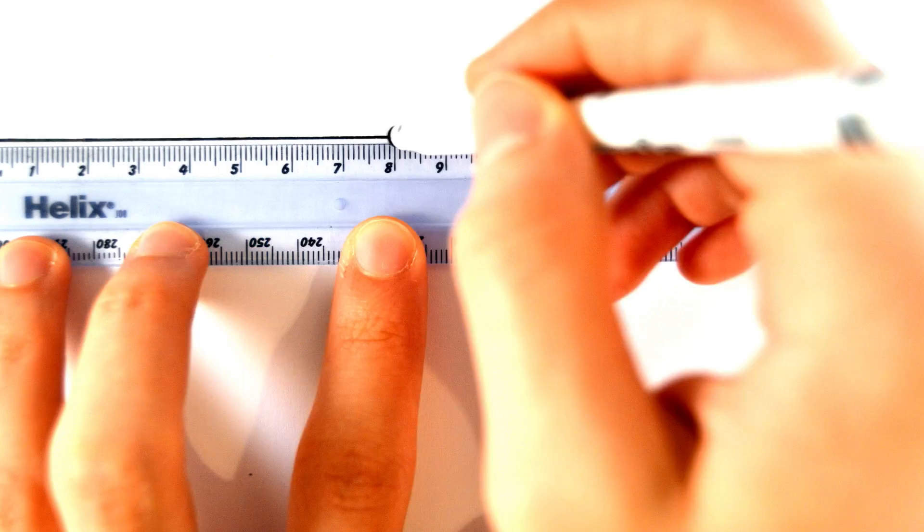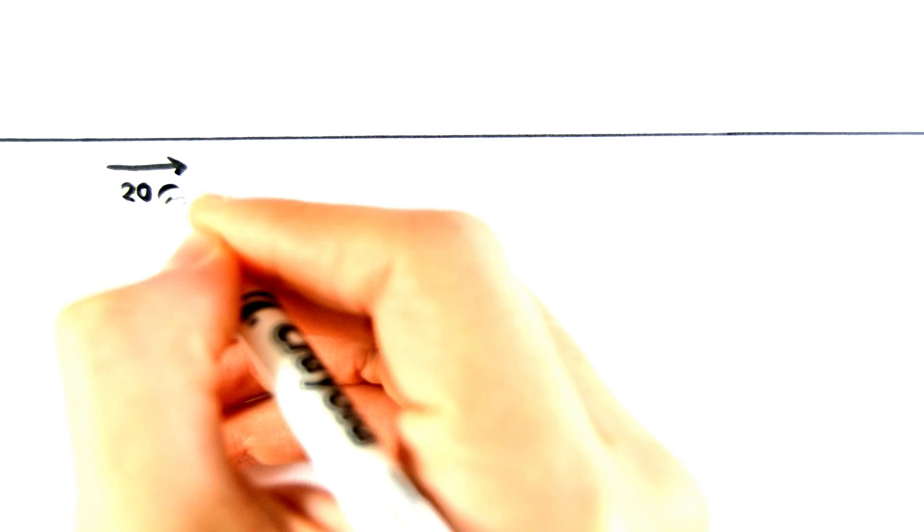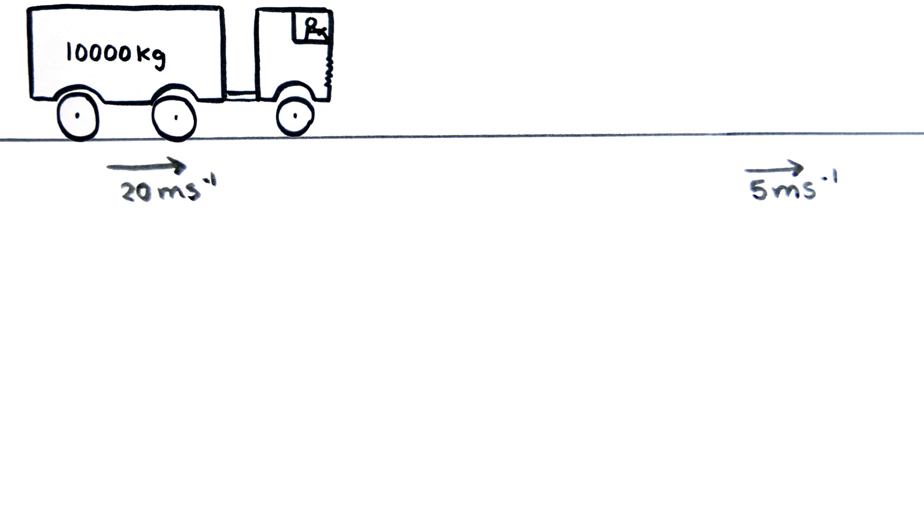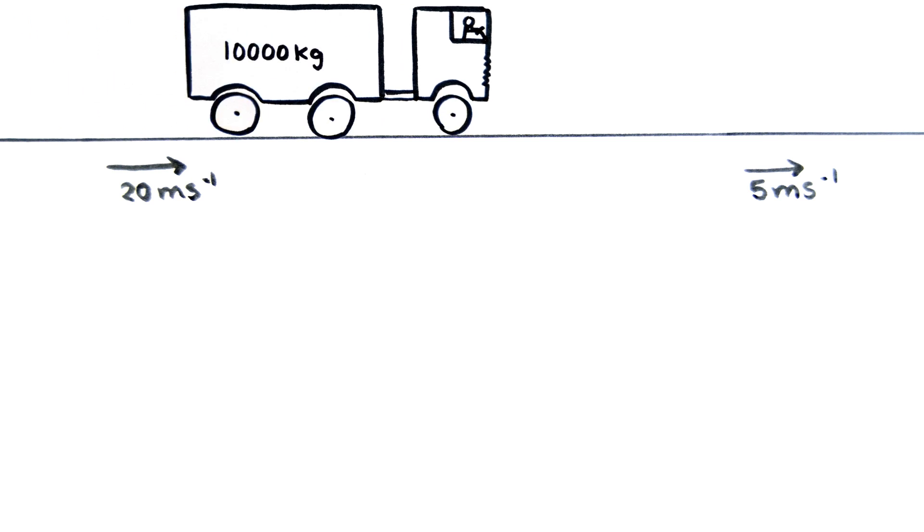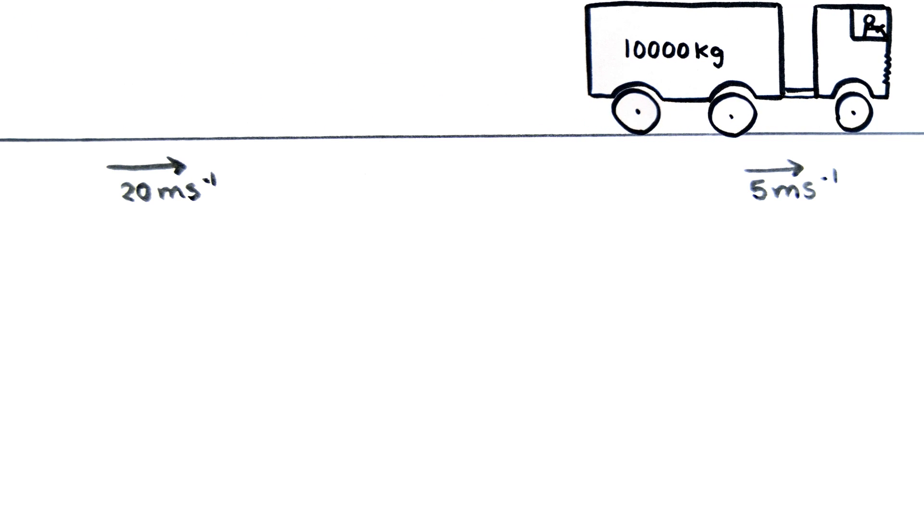For example, a lorry of mass 10,000 kilograms is initially travelling at 20 meters per second. The lorry driver applies the brakes and slows down to 5 meters per second, which takes 5 seconds.